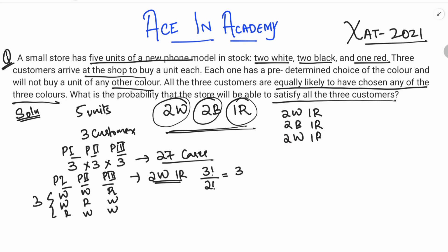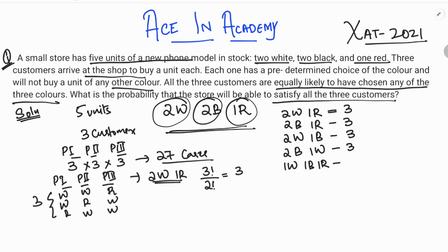Two white and one black, and two black and one white are also satisfiable. The last case is one white, one black, and one red. For each of the first four combinations, the permutation count is 3!/2! = 3. For one white, one black, and one red, it is 3! = 6 different arrangements.